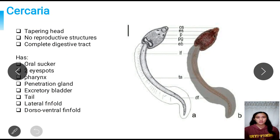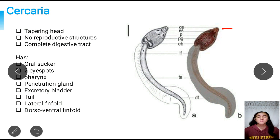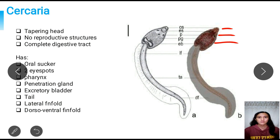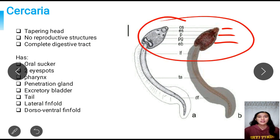Next, we have the cercaria. The cercaria has a tapering head and no reproductive structure; however, it does contain a complete digestive tract. It also has an oral sucker responsible for adhering to their host. They have two eyespots, a pharynx, and a penetration gland. The penetration gland plays an important role in host penetration — it can even penetrate chitin-covered arthropods, or in this case penetrate the scales of their second intermediate host, which is the fish. It also has an excretory bladder. All of these are located in their head.